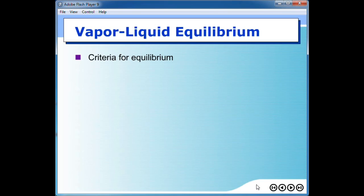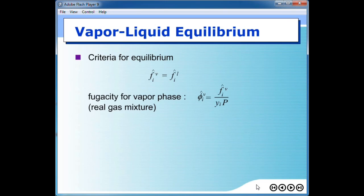Earlier we derived the criteria for equilibrium: that the chemical potential of the same species in all phases is supposed to be equal. So if we apply the same criteria to vapor-liquid equilibrium, we can write the equation. For the vapor side, we can define the fugacity coefficient as written here — this is for a real gas mixture, for any kind of gas mixture.